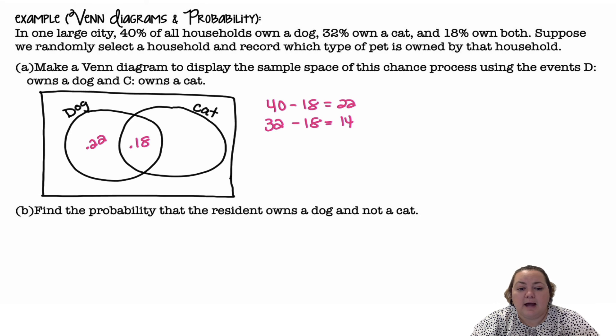32% own a cat, but 18% of those also own a dog. So I'm subtracting that out and getting 14%. Now, this whole box, everything in the box has to add up to 100% or 1. So I'm going to do 1 minus 0.22 minus 0.18 minus 0.14, and I get 0.46 to go outside. They don't own a dog or a cat.